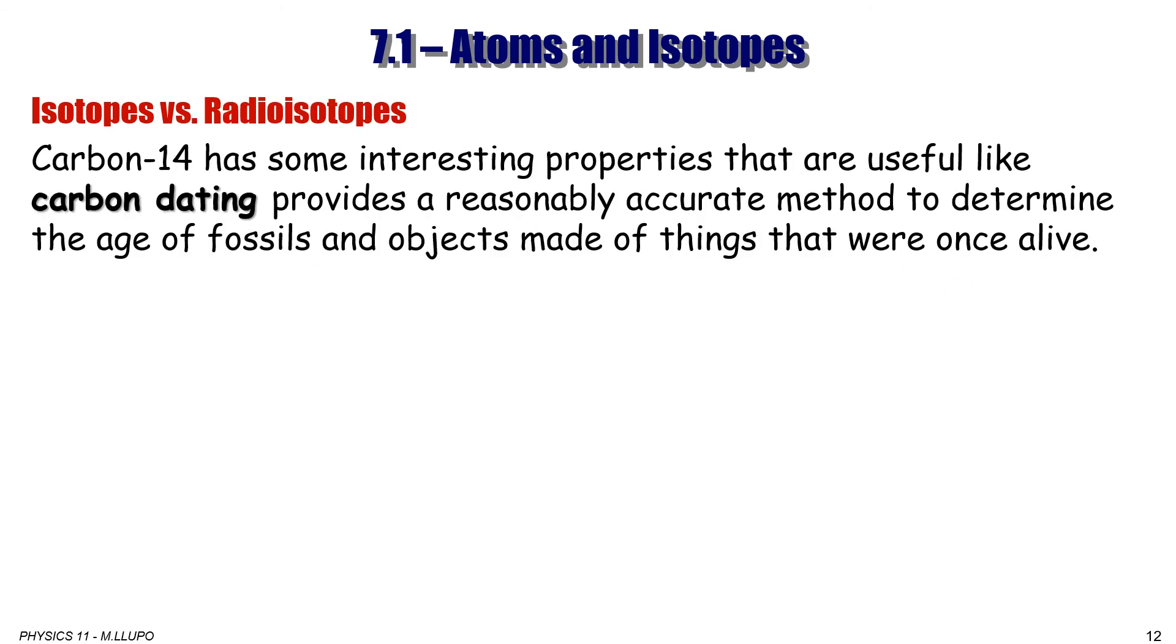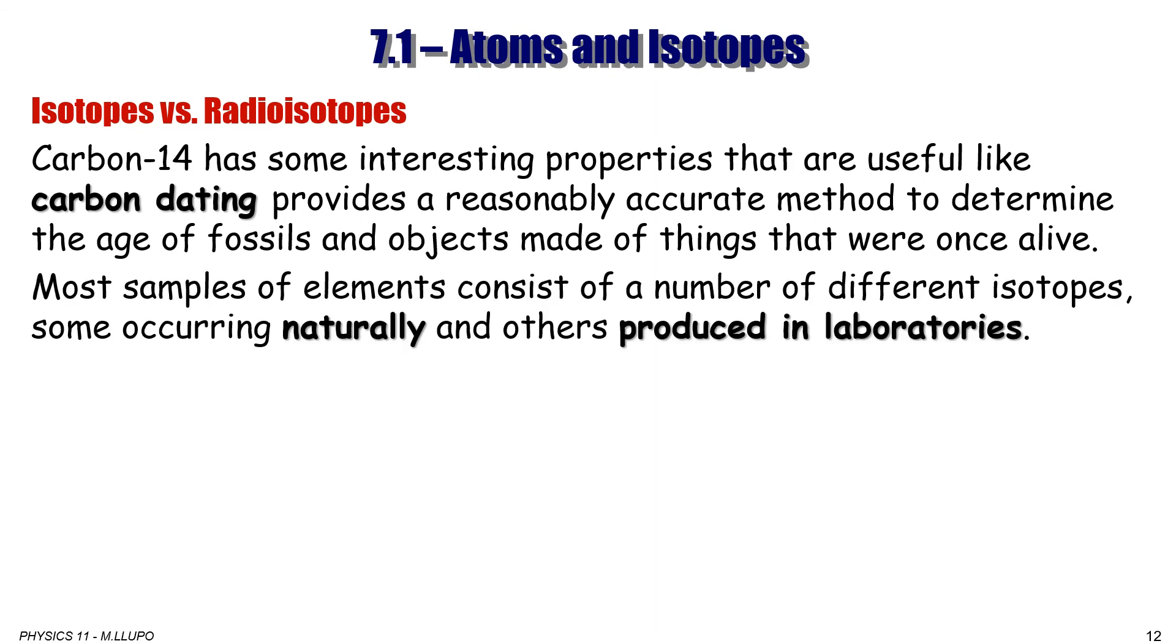Carbon-14, which is one of the isotopes of carbon, has some interesting properties that are useful, like carbon dating, which provides a reasonably accurate method to determine the age of fossils, objects made of things that were once alive. Most samples of elements consist of a number of different isotopes, some occurring naturally, and others produced in laboratories.